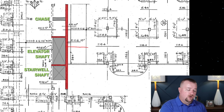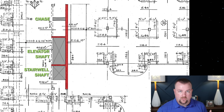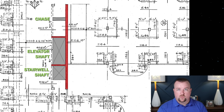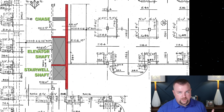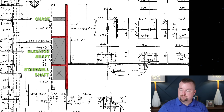Under the American Concrete Institute code, we call that development length or embedment depth. When you only have an embedment depth of three to four inches, that's really not enough to resist that pullout motion.